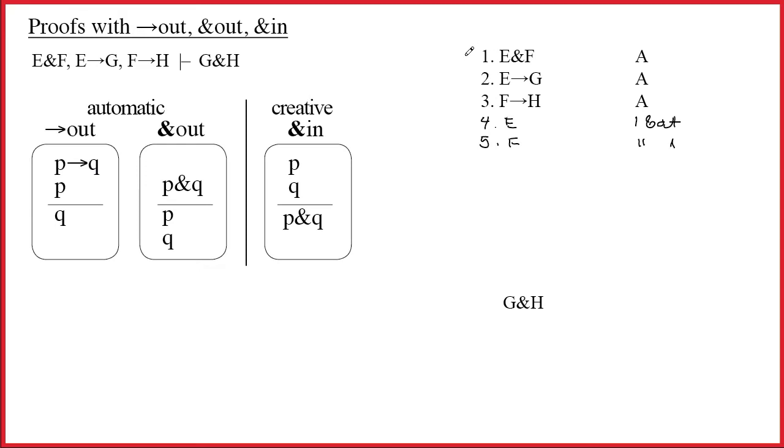And we use the ditto marks to show that we did it twice. All right, so let's check off that line because we worked in its main connective. Line two, the arrow is also the main connective. Now the arrow is the main connective.